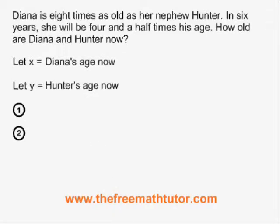The next thing to do is to make two equations with two variables. The paragraph gives all the information we need. Usually the information for one equation is grouped together and then the information for the other equation follows. Diana is eight times as old as her nephew Hunter means x equals 8y.